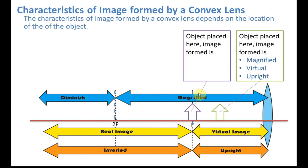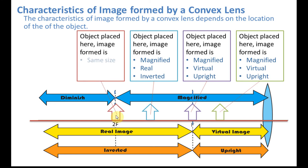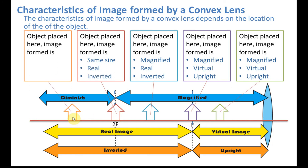An object between O and F is still magnified and virtual and upright. An object between F and 2F is still magnified because it is less than 2F, but now it is past F, so the image becomes real and inverted. An object exactly at 2F gives same size, real, and inverted. An object further than 2F gives diminished, real, and inverted. Remember these characteristics — this is a frequently asked question in school tests.